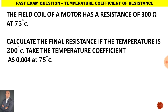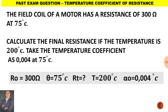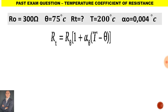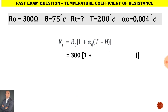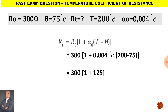For the final question in this module: the field coil of a motor has a resistance of 300 ohms at 75 degrees Celsius. Calculate the final resistance if the temperature is 200 degrees Celsius, taking the temperature coefficient as 0.004 at 75 degrees Celsius. Substituting all the values into the formula: 300 for the original resistance, 1 plus 0.004, and (200 minus 75) degrees, gives a total resistance of 450 ohms.